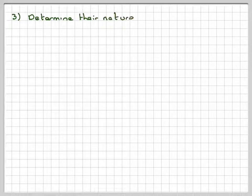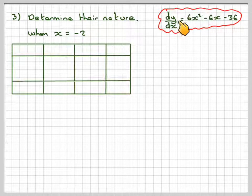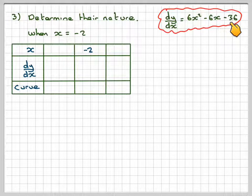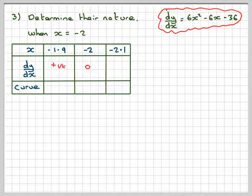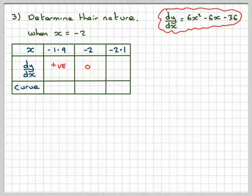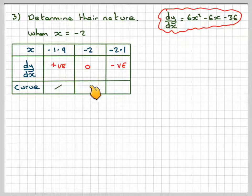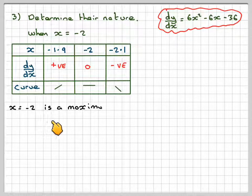Step 3 is to determine the nature algebraically. For x = -2, we substitute into the gradient function 6x² - 6x - 36. A point just before -2 is -1.9, and just after is -2.1. Putting -1.9 in comes out positive; putting -2 in gives 0; putting -2.1 in gives a negative value. Positive slope → horizontal → negative slope: therefore x = -2 is a maximum point.